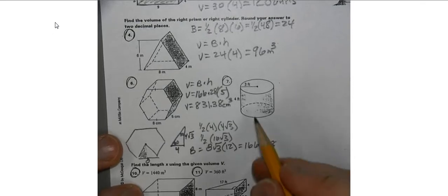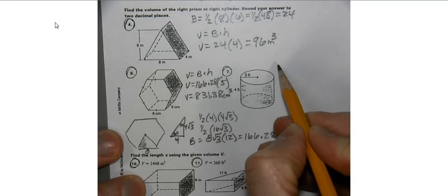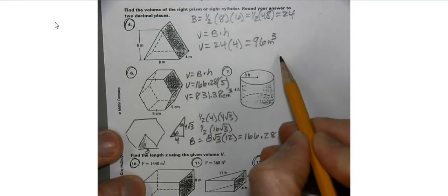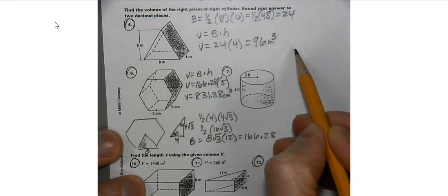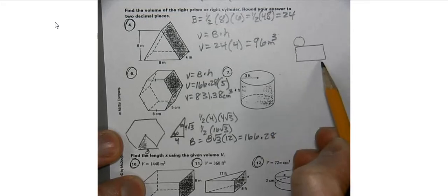Now we have a cylinder. The cylinder is done a little bit differently for volume. When we unroll it, we have a circle here.